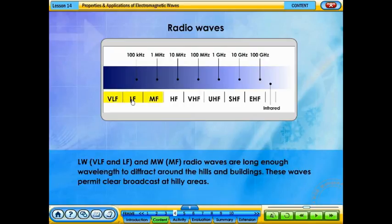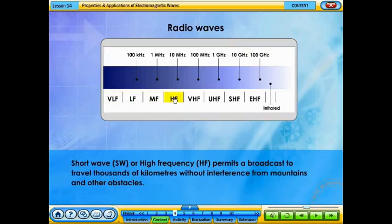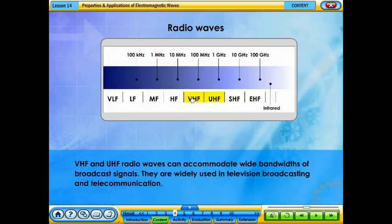Long wave or very low frequency, and low frequency and medium wave or medium frequency radio waves, have long enough wavelengths to diffract around hills and buildings, permitting clear broadcast in hilly areas. Short wave or high frequency permits a broadcast to travel thousands of kilometers without interference from mountains and other obstacles. Very high frequency and ultra high frequency radio waves can accommodate wide band waves of broadcast signals and are widely used in television broadcasts.